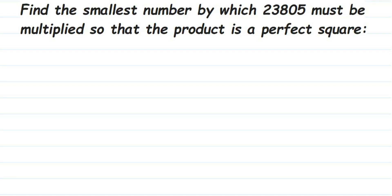Hey everyone, here's a question on square and square root. The question is: find the smallest number by which 23,805 must be multiplied so that the product is a perfect square. This number is not a perfect square; we have to make it a perfect square by multiplying with the smallest number.